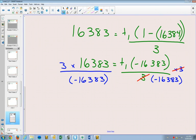Is 3 times 16,383 an easy thing to do in mental math? No. Is 16,383 divided by negative 16,383 hard to do mental math? No. It's equal to negative 1. And negative 1 times by negative 3 will give us negative 3 for term 1.